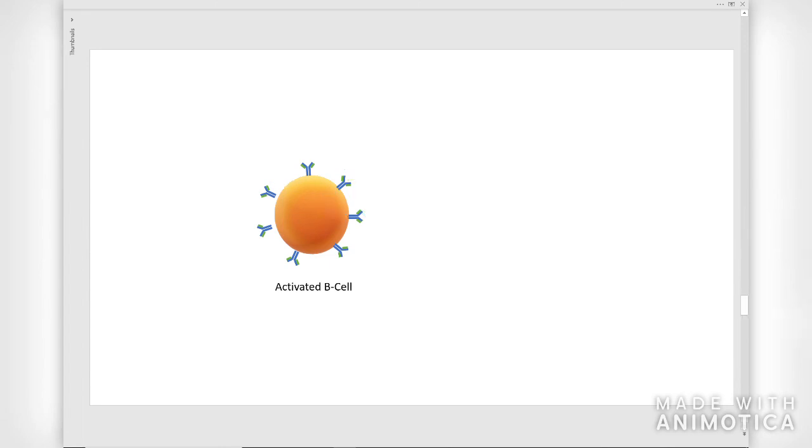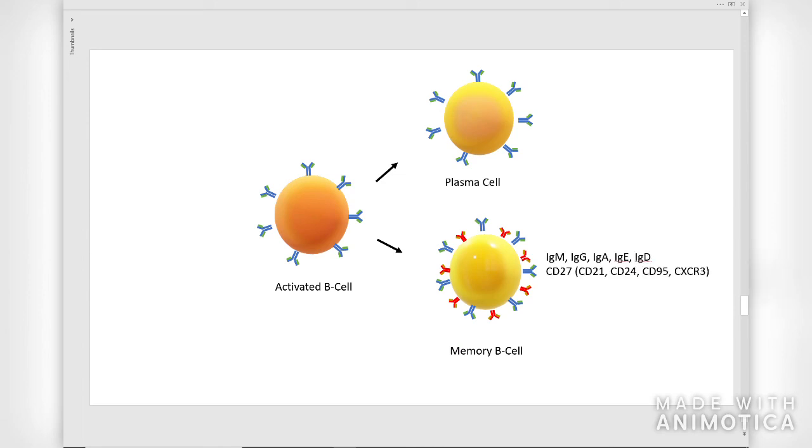The activated B cells then proliferate and differentiate into plasma cells and memory B cells. The memory B cells have a higher expression of membrane-bound antibodies and secrete mainly IgG in the secondary response. Memory B cells also have other markers such as CD27 which help to recall previous responses.